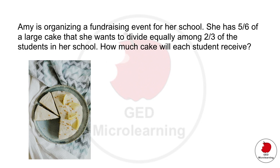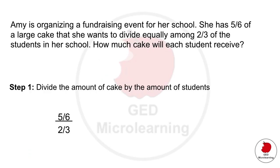So in the first problem they're telling you that this person is organizing. She has a cake and she wants to divide it among two-thirds of the students in her school and they're asking how much cake will each student receive.